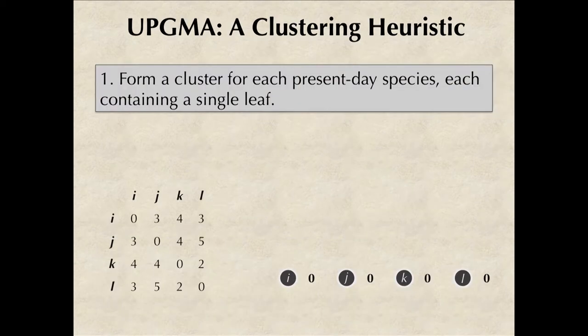So the heuristic that we're going to introduce for constructing an ultrametric rooted binary tree is called UPGMA, which stands for unweighted pair group method with arithmetic mean. UPGMA is going to construct an evolutionary tree by clustering the species from the distance matrix into larger and larger clusters, beginning with single element clusters.